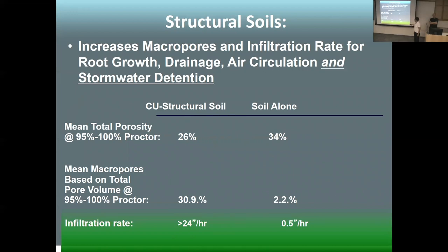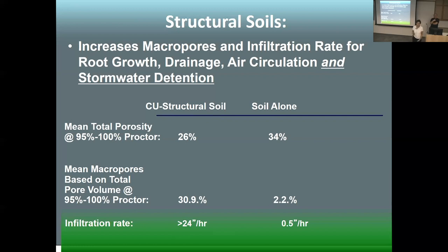In structural soils, the mean porosity is 26% compared to 34% for soil alone. But after compacting to Proctor density, only 2% of soil alone has macro pores that allow water to drain, whereas 31% of compacted structural soil allows water to drain through. The infiltration rate is 24 inches per hour versus less than half an inch per hour in just soil. If you put pervious pavement over soil without something allowing rapid infiltration, you get no infiltration — and then people say porous pavement doesn't work.